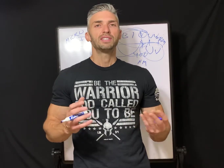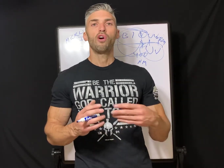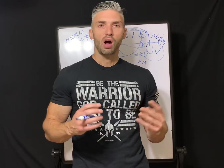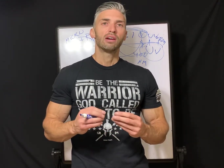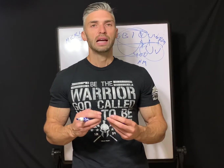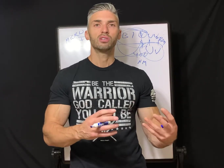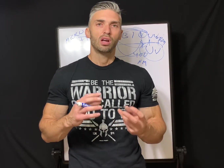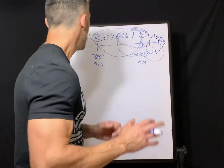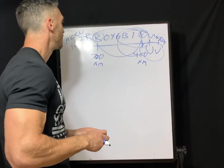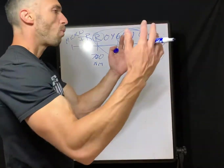Cone photoreceptor cells are responsible for sharp central and color vision. They are highly and densely concentrated in the macula and at the center of the macula — the fovea centralis. Cones activate based on different wavelengths of light, so different colors make the cone photoreceptor cells react differently.